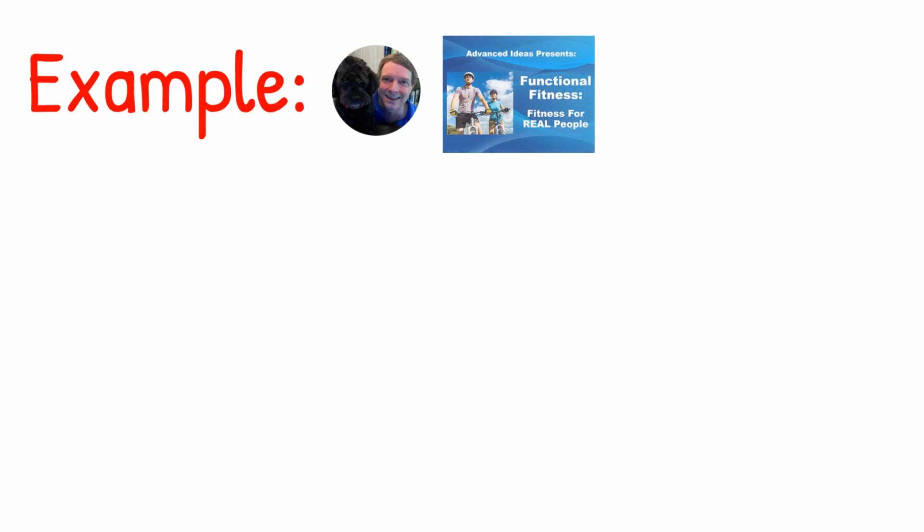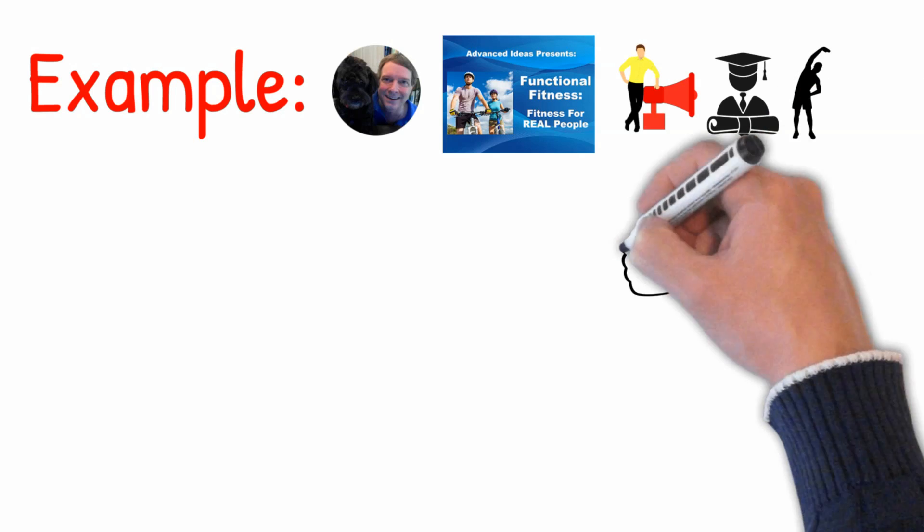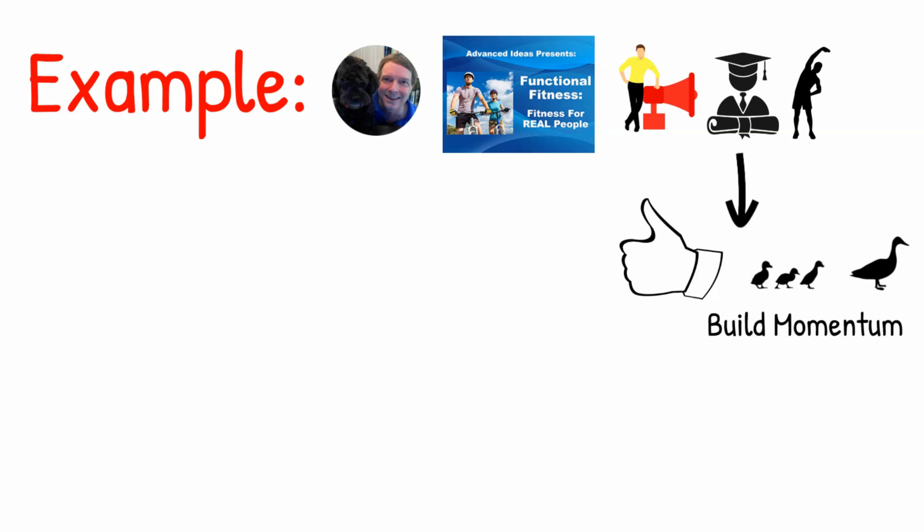After leaving a lovely comment on my video, I checked out Paul's channel, Advanced Ideas, and saw that in his video 'Functional Training for Real People,' he's advertising a course on the subject of functional training which he himself created. I then thought it's a great example of building momentum, which is the first rule I presented here. And that is because he created his video with a clear goal and CTA: people checking out his functional fitness course and enrolling in it.